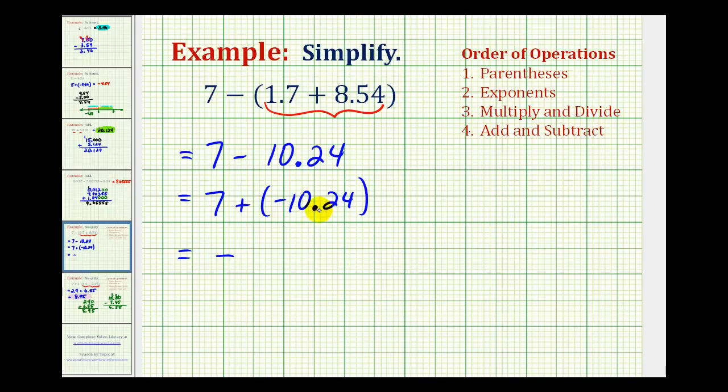And the absolute value of negative 10.24 is going to be the larger absolute value. That's going to be positive 10.24 minus, and the absolute value of positive 7 is positive 7. So we line up the place values as we did before.